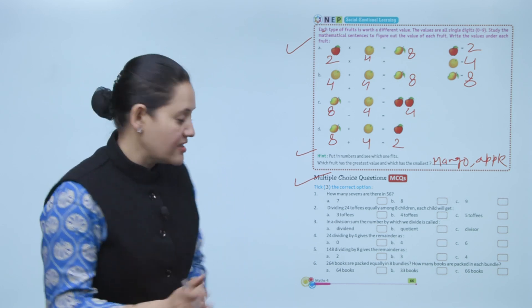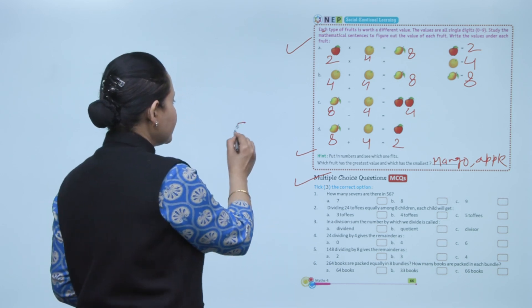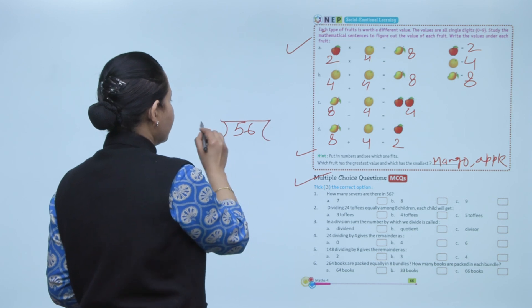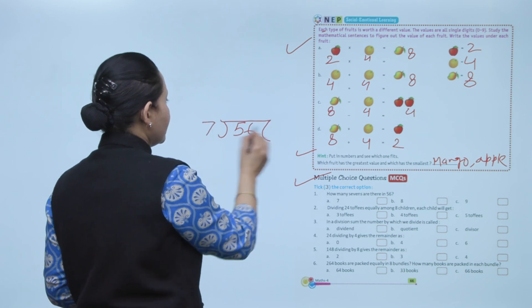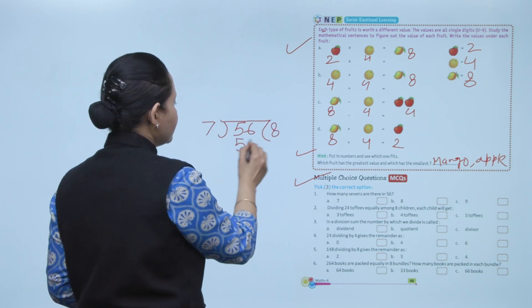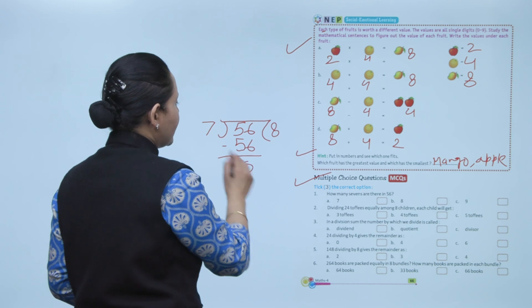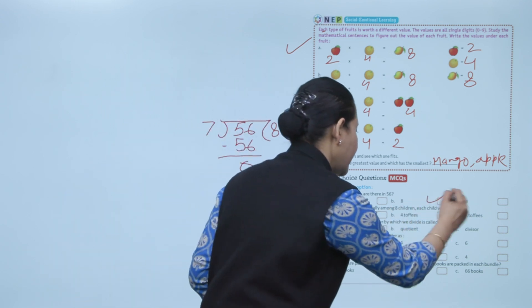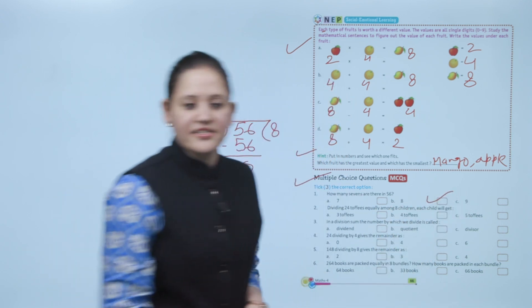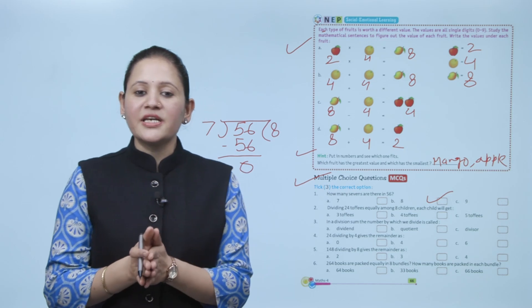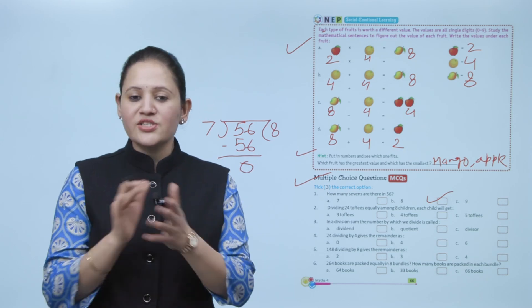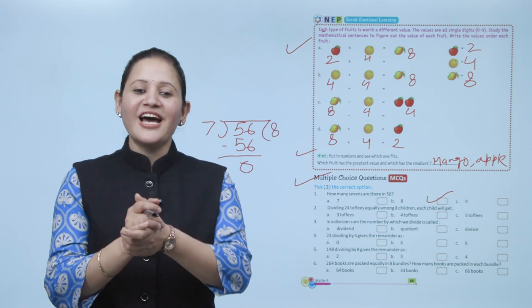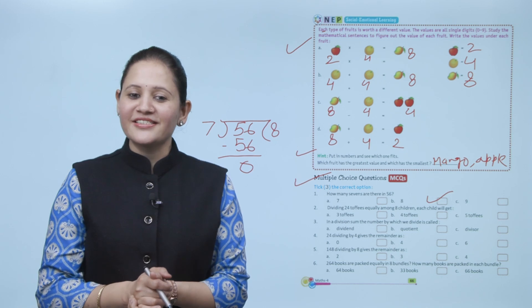To find the answer: 56 ÷ 7 — since 7 × 8 = 56, there are eight 7s in 56, so B is the correct answer. Here we end the chapter. I hope you understood it well — now practice all the questions.